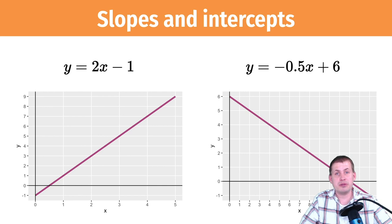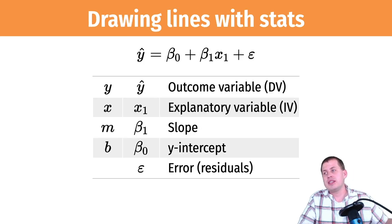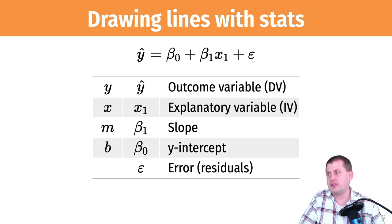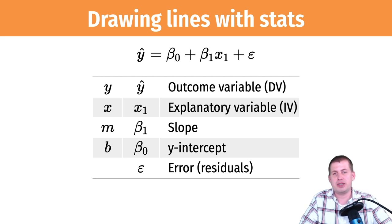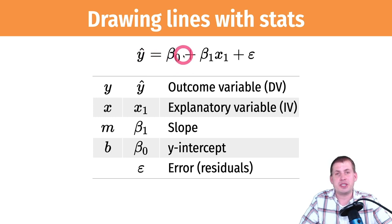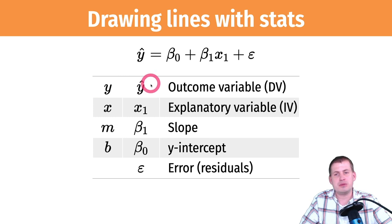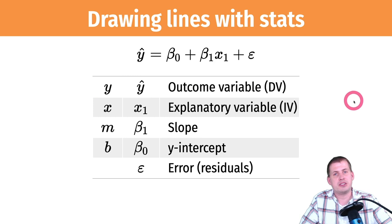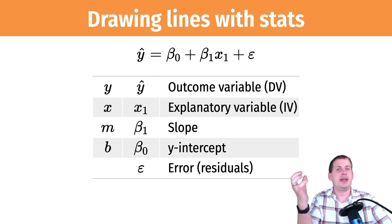This is important because in statistics and regression models you do exactly the same thing. Instead of y = mx + b, you use ŷ = β0 + β1x1 + ε. This maps onto y = mx + b precisely. Your ŷ — 'y-hat' — means predicted y; it's your outcome variable, your dependent variable, the thing you're trying to explain. So if we're asking whether humidity influences high temperatures, high temperatures is the outcome.